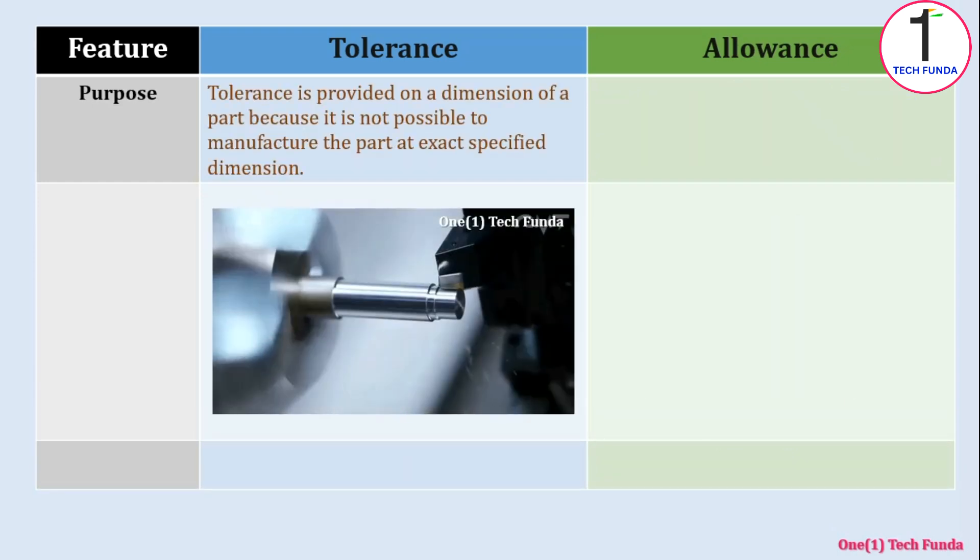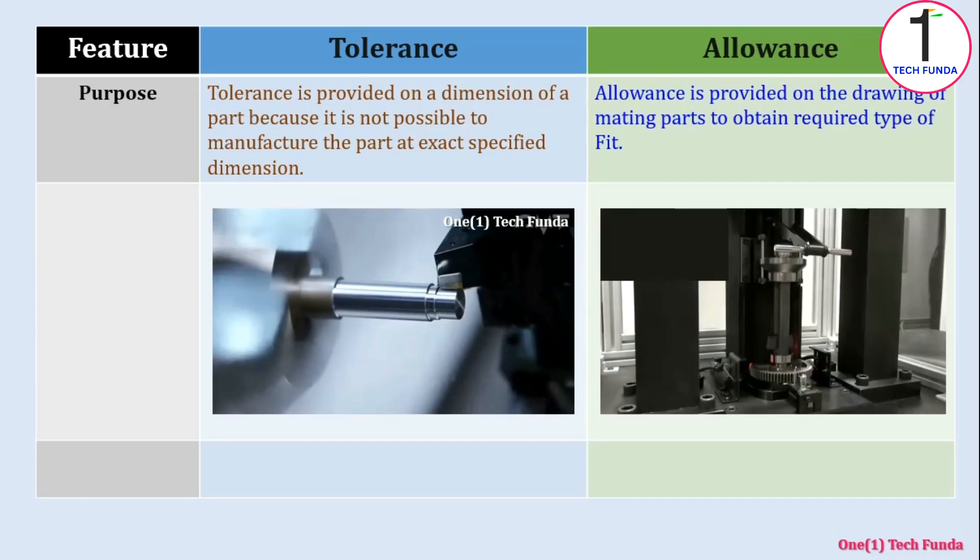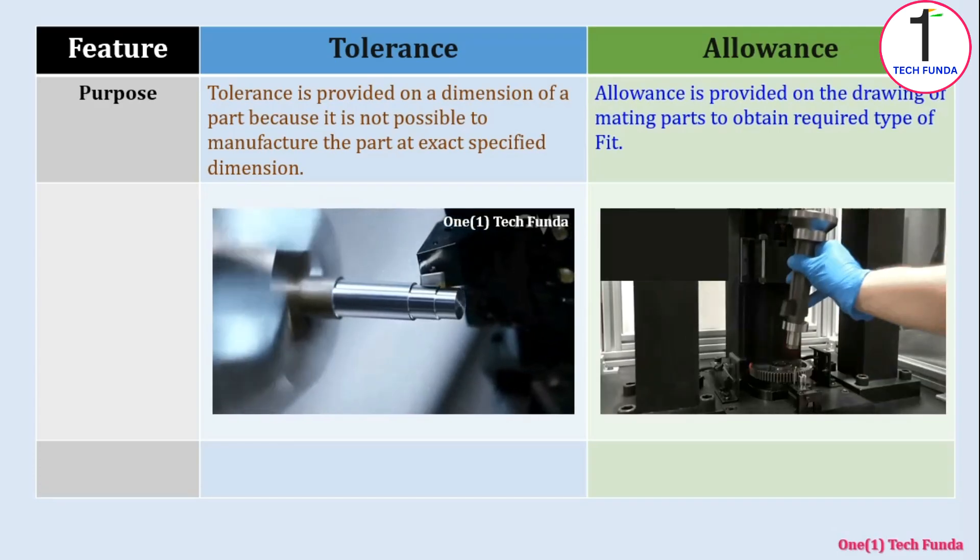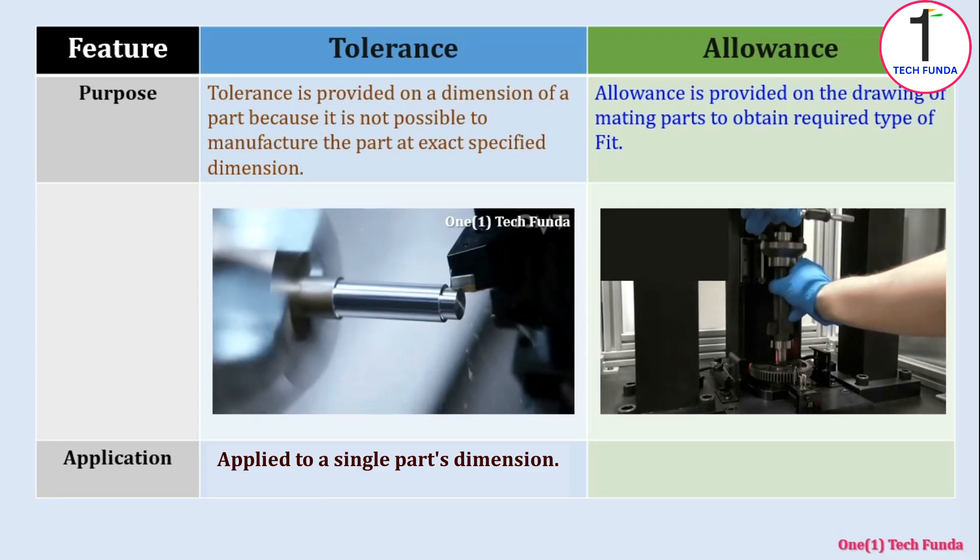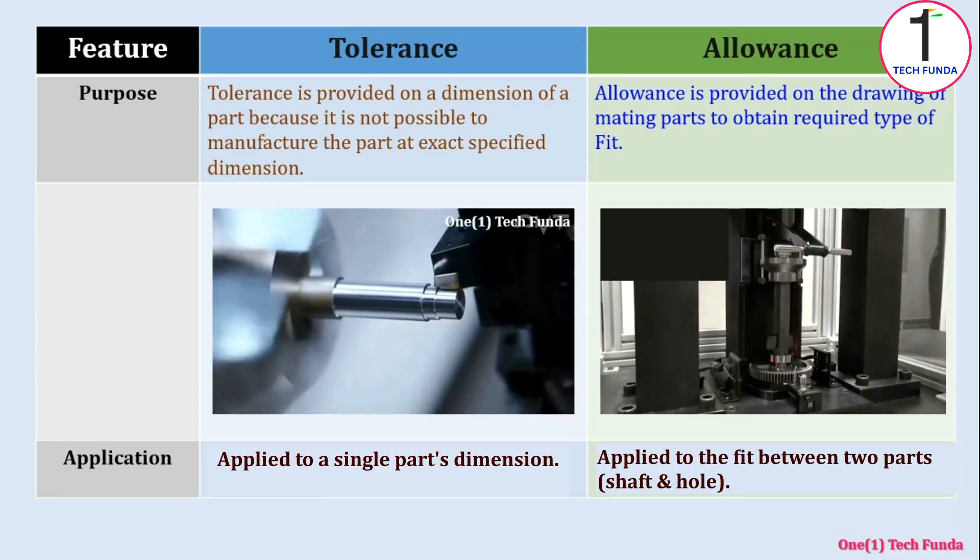Tolerance is provided on a dimension of a part because it is not possible to manufacture the part at exact specified dimension. Allowance is provided on the drawing of mating parts to obtain required type of fit. Tolerance is applied to a single part's dimension. Allowance is applied to the fit between two parts: shaft and hole.